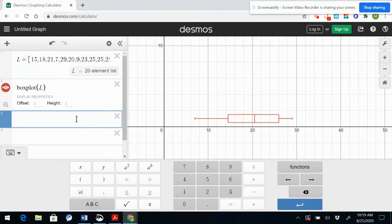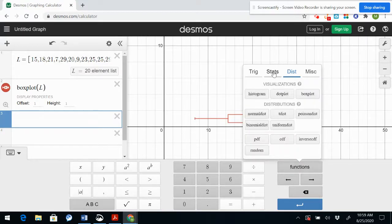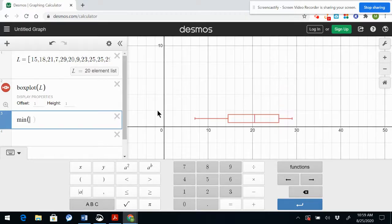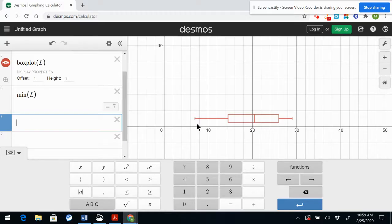Say I want to know the minimum. I go to the open box here and I go to functions and I want the stats on this box plot so I'm going to click stats and minimum, then I have to enter my data set L and enter. So my minimum is 7 which coincides with the graph I see over here of 7.